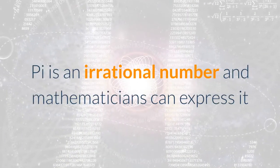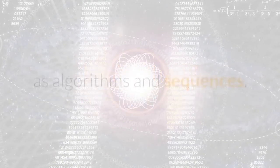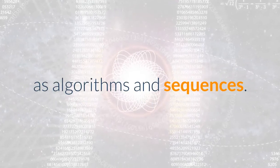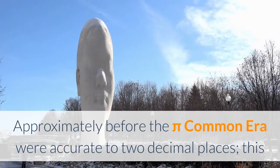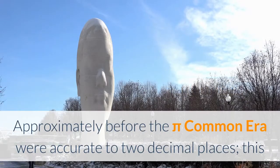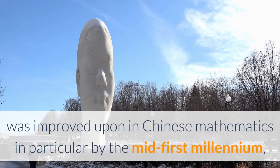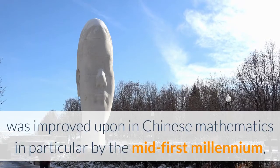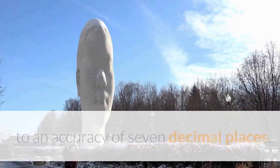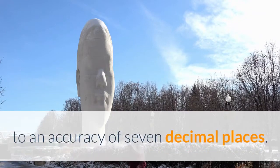Pi is an irrational number and mathematicians can express it as algorithms and sequences. Approximately before the Pi Common Era, calculations were accurate to two decimal places. This was improved upon in Chinese mathematics in particular by the mid-first millennium to an accuracy of seven decimal places.